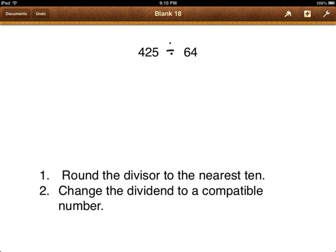So here's the first problem that we're going to look at. This problem reads 425 divided by 64, and we want to estimate this to find a quotient. Here are our steps. The first thing you're going to do is round the divisor to the nearest 10. Well, this number here is my divisor. So if I rounded that to the nearest 10, I would get 60.